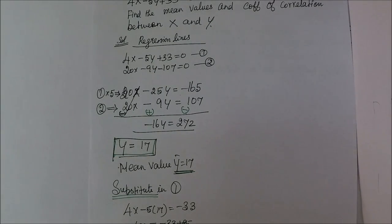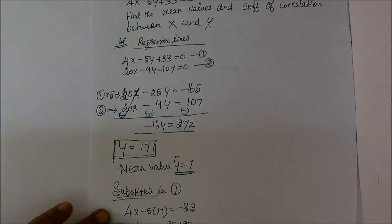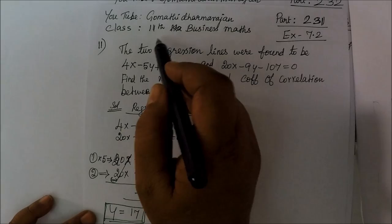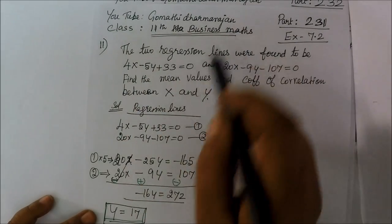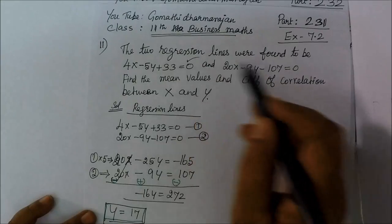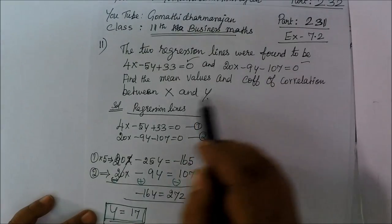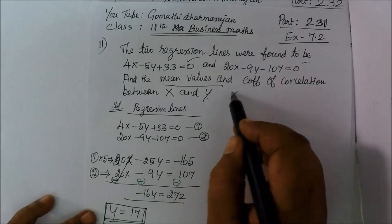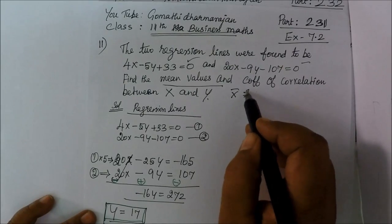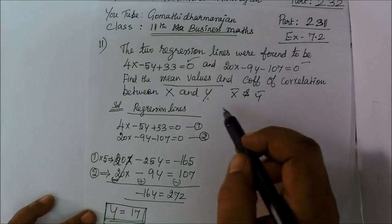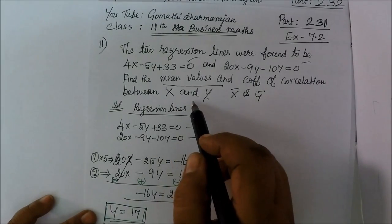Question number 11 in Exercise 7.2, which is called Business Maths. The two regression lines were found to be two equations. We have to find the mean values — that is x̄ and ȳ — and the coefficient of correlation between x and y.